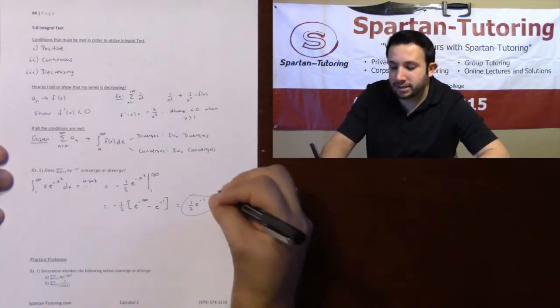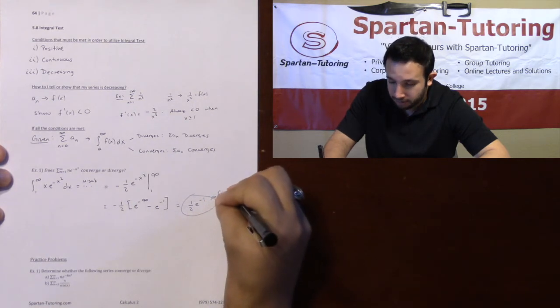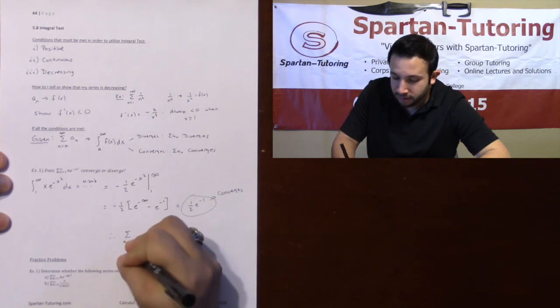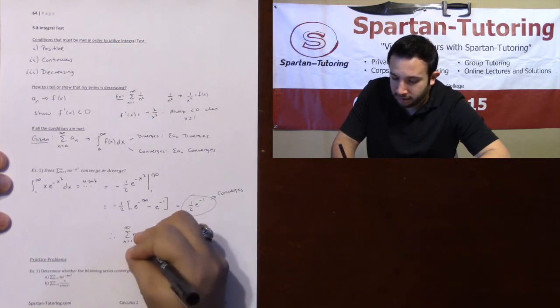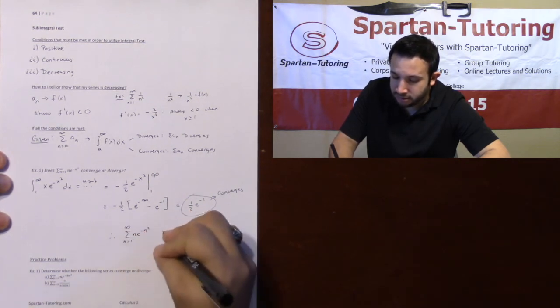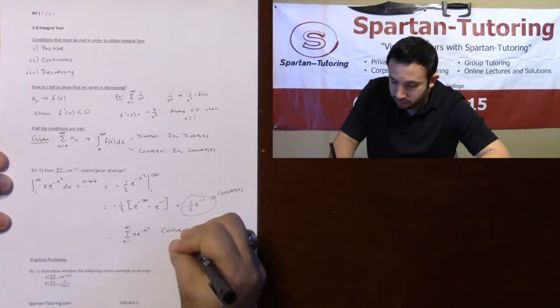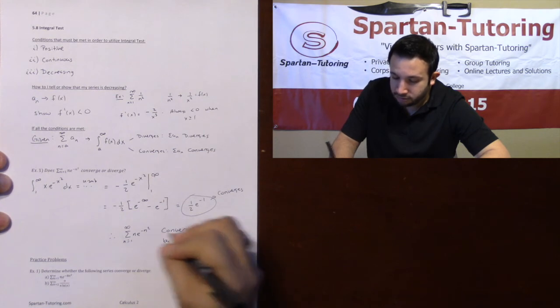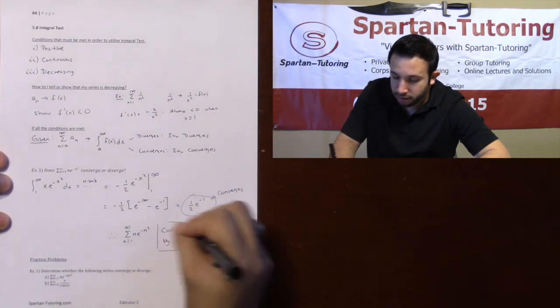And because your improper integral converges, therefore the sum from 1 to infinity of n e^(-n²) will converge. It will converge by the integral test.